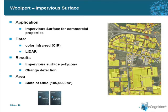Another large-scale product is impervious surface mapping for commercial properties, done by the company Woolpert. The data used is color infrared data in combination with LIDAR. The results produced are impervious surface vector polygons, and because the analysis is done several times over time, it also produces change detection of the impervious surface. The area covered is the entire state of Ohio, which is around 100,000 square kilometers.